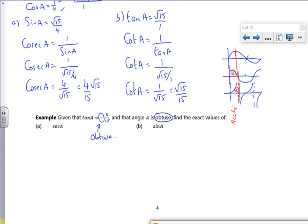But from 90 to 180 where it's obtuse, only sine is positive. Cos and tan both have negative y values. So this is telling us it's obtuse. It's telling us that sine will be positive, but cos will be negative. So you've got to remember that. It's important.